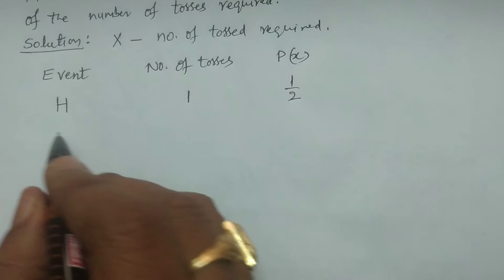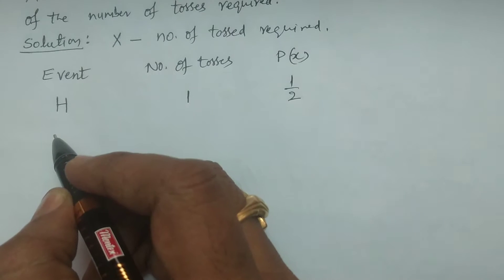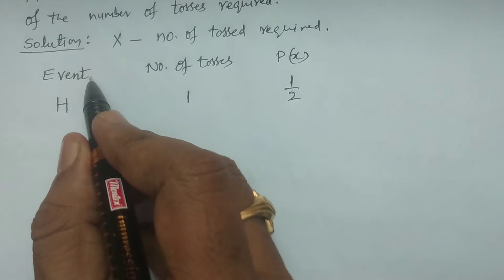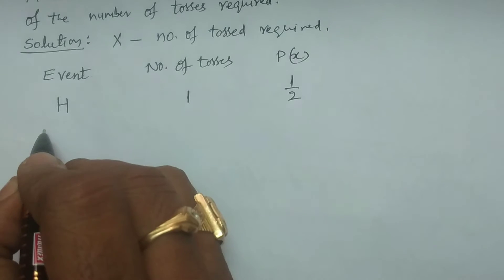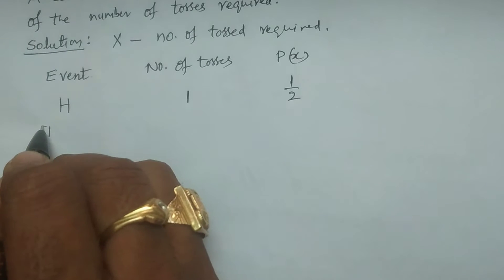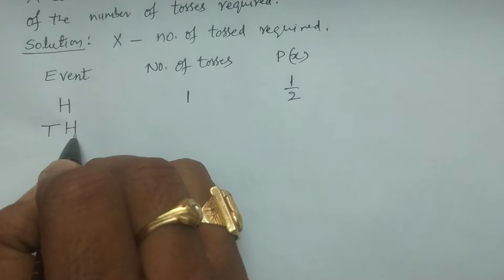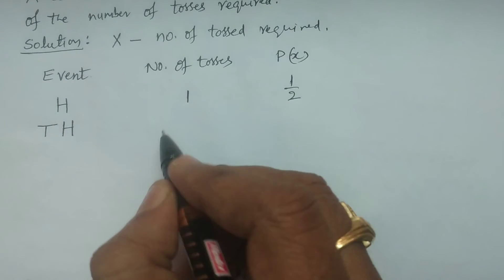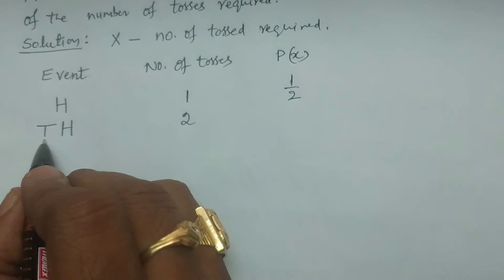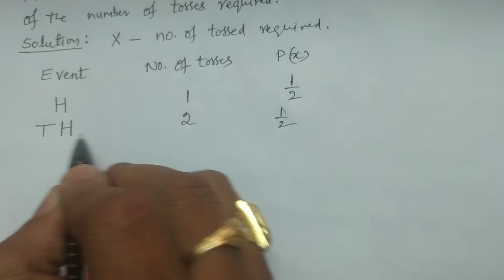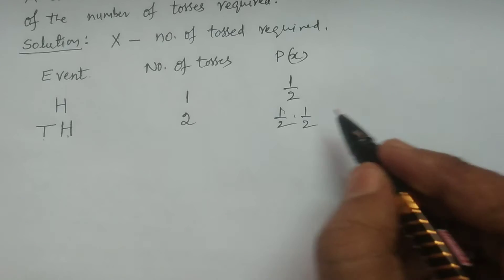Coming to the next possibility: in the first toss, head is not obtained — that is a tail. In the second toss, head may be obtained. So the number of tosses is 2. The probability of getting a tail is 1/2 and then a head is 1/2, giving a total probability of 1/4.